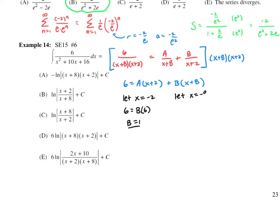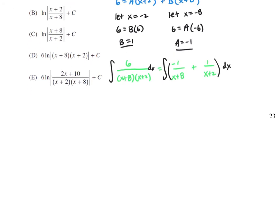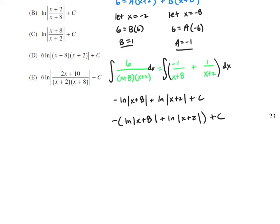Then letting x equal negative eight, we get 6 = A times negative six, so A is negative one. Our original fraction decomposes into negative one over (x+8) plus one over (x+2). Integrating gives us negative ln|x+8| + ln|x+2| + C. Factoring out a negative, we get negative ln|(x+8)/(x+2)|.